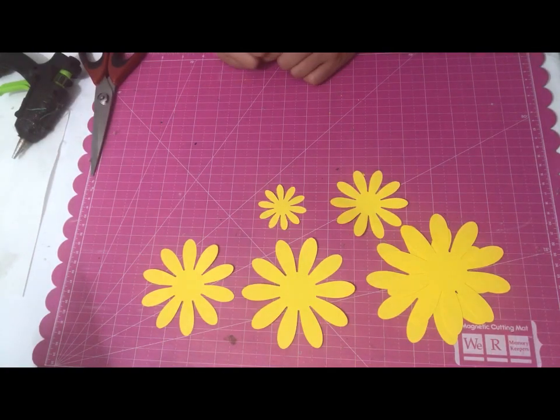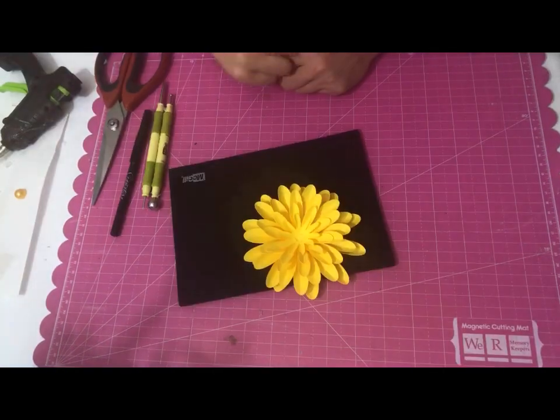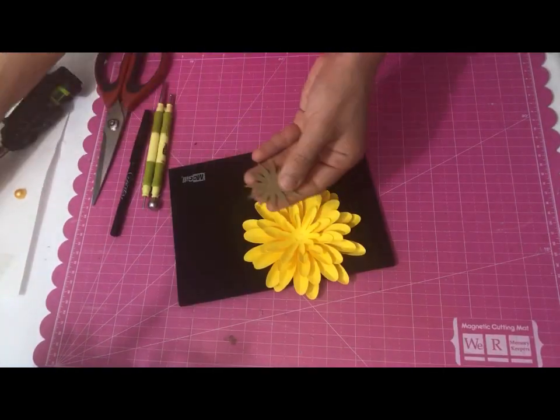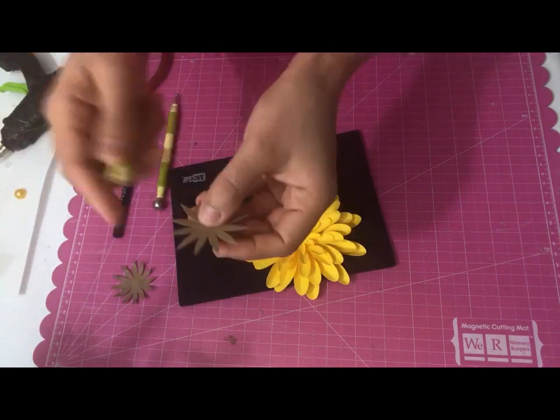For this paper daisy, I need five template sizes and I need two templates for the biggest size. For each center, I need another template, and for this one, I will curl them upwards like this.